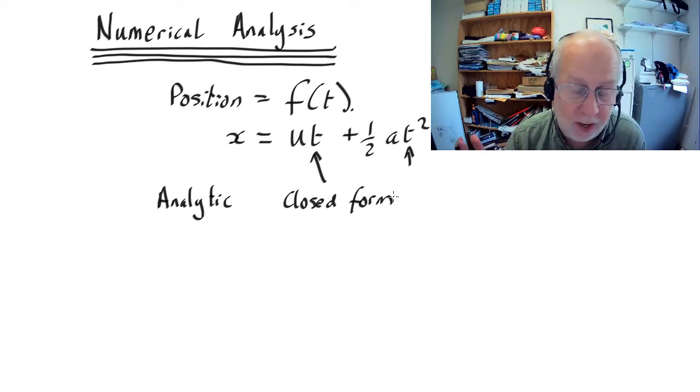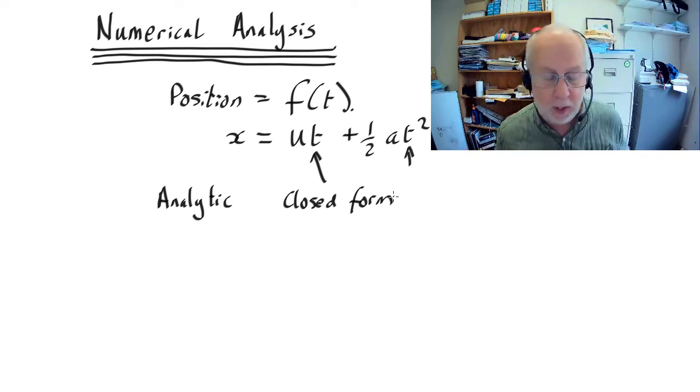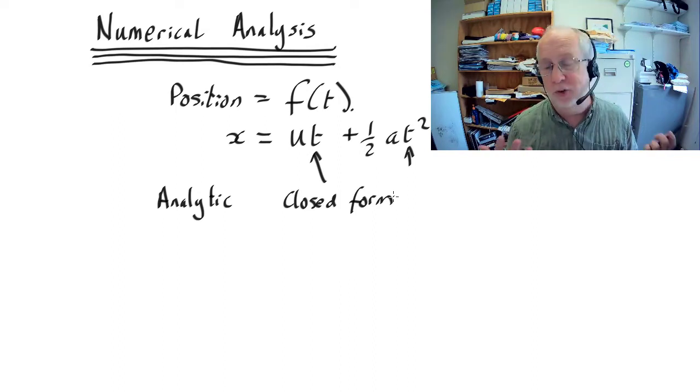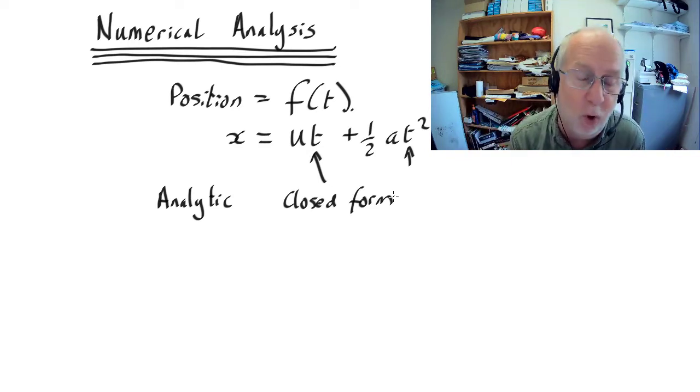Now this is what's called an analytic or closed form solution, because you can write down an equation that will tell you the position at any time. And it's not just the position, it could be temperature or voltage or anything like this. Whatever it is you want to know, you can solve for mathematically and get an equation that will tell you what it's going to be wherever and whenever you want. Sounds wonderful, and it is wonderful when you can do it.